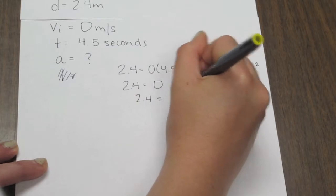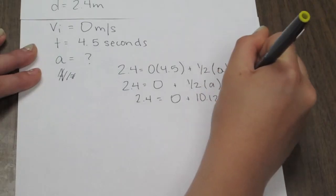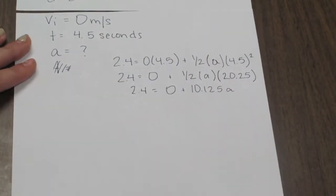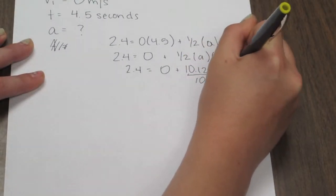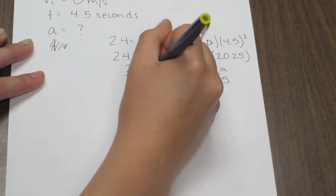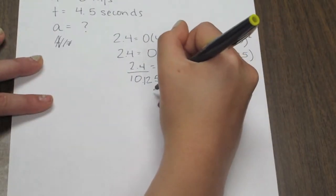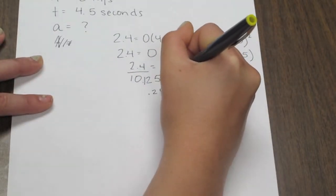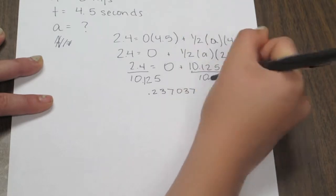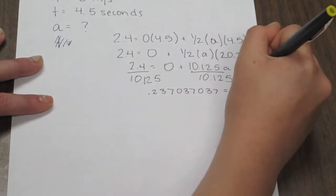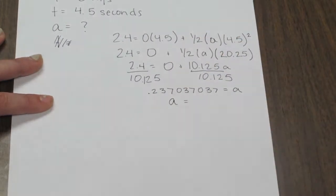Simplify even further to get 2.4 equals 10.125a. Now divide by 10.125 on both sides to get a equaling 0.237037037, which rounds up to a equaling 0.24 meters per second squared.